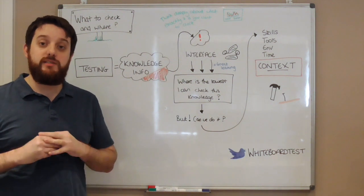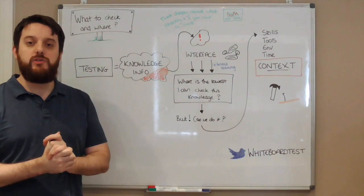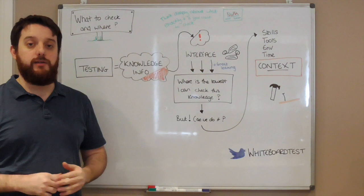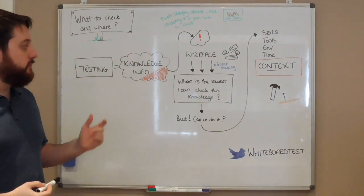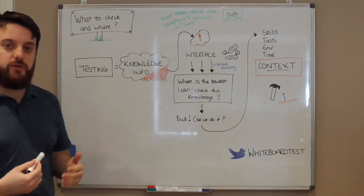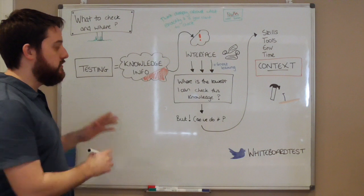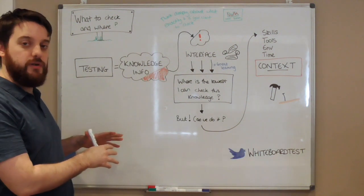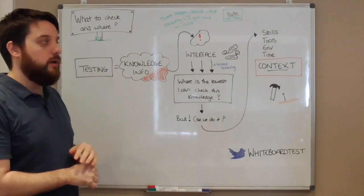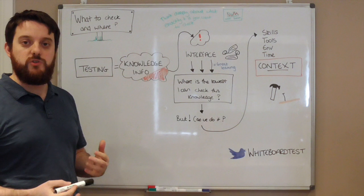Hi and welcome to another whiteboard testing video. In this video we're going to talk about what to check and where to check it. I've done a rough diagram, a rough flow of something that I think most of us do. This is not tied to a specific role or person. I think this is a generic flow, and I'm going to try and talk about some examples as we go through.